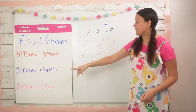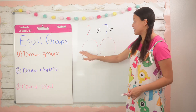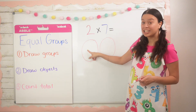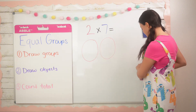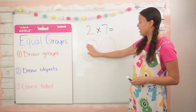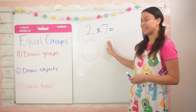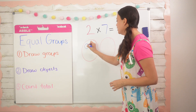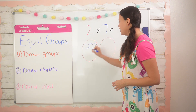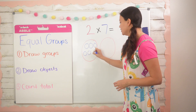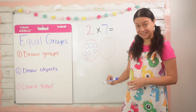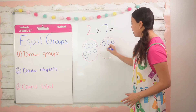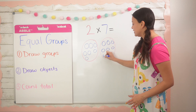Step number two says to draw the objects inside. The second factor tells us how many objects we're going to draw inside of each group. In this case we're going to draw seven in this group and seven in the second group as well. One, two, three, four, five, six, seven. And I'll do the exact same thing right here: one, two, three, four, five, six, seven.